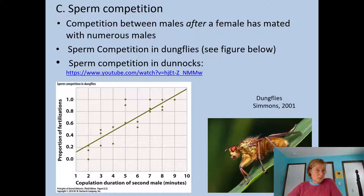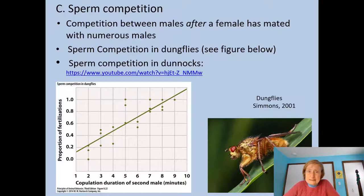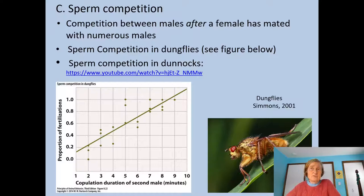But could there be competition between males even after mating? Yes — sperm competition can happen. That's competition between males after a female has mated with several males; some sperm may be better able to fertilize her eggs. Dung flies are a good example. A male copulates with a female, then she may copulate with another male, and another. The last male to copulate is most likely to father the offspring. The longer the last male copulates, the higher the proportion of offspring that are his, because his sperm displaces the earlier male's sperm.